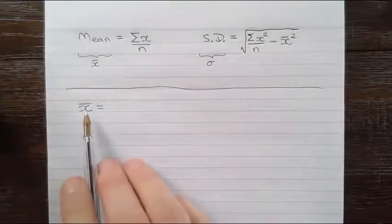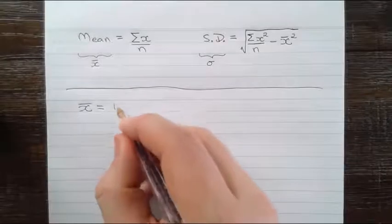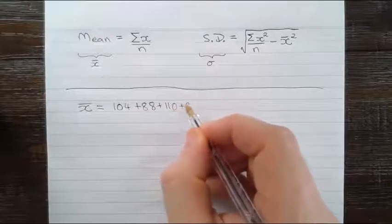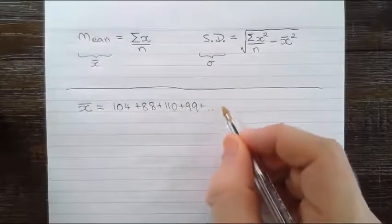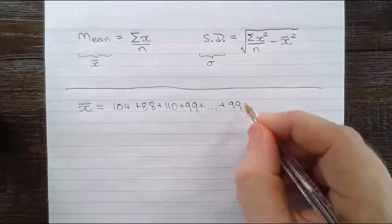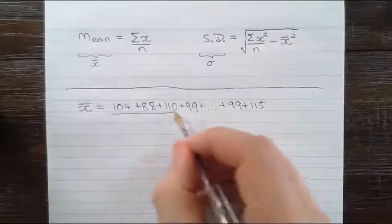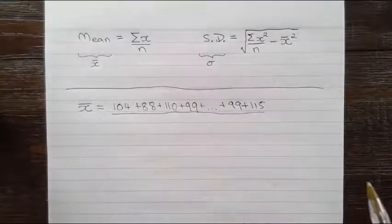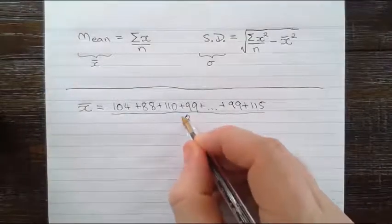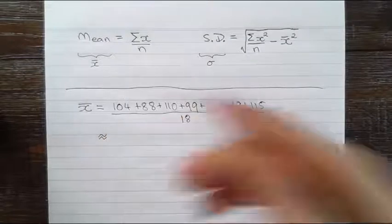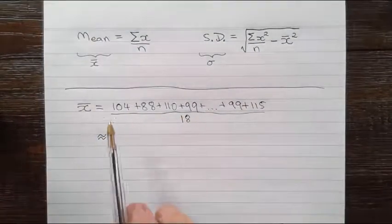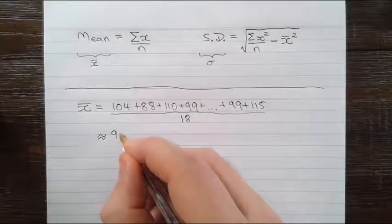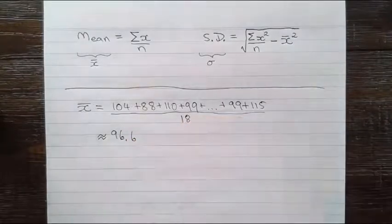Let's look at calculating those. x̄ is the sum of the values: 104 plus 88 plus 110 plus 99 and so on down the list of numbers to the end where we have 99 and then 115. We need to add up all of those numbers and divide by the total number of data values. Adding those up, we find that there are 18, so n equals 18. With our calculators, we find that that's 1738 divided by 18, which is approximately 96.6, or 96.5 recurring.